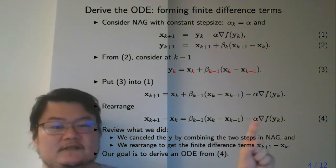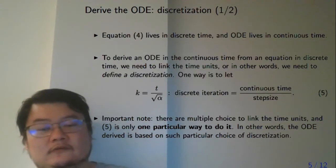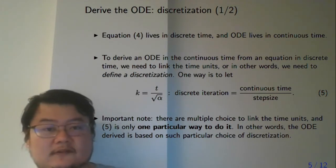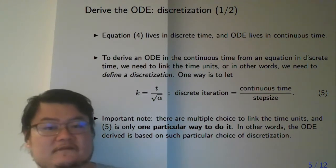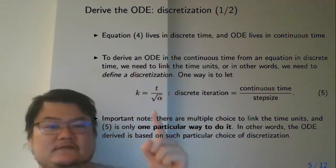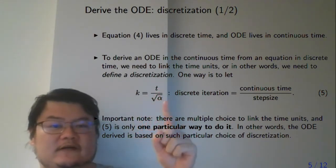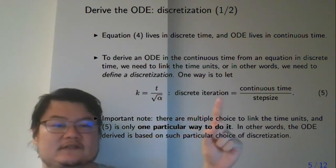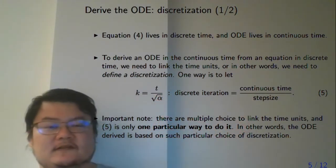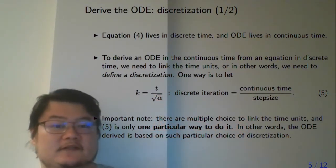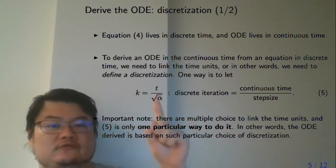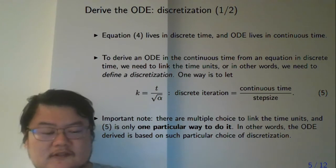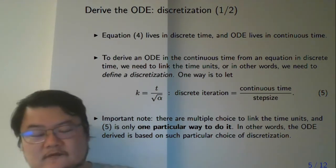Because the finite difference equation is in discrete time and ODE is in continuous time, to link them you need discretization. Here the discretization is k equal to t divided by square root alpha, which means the discrete iteration is time divided by step size. Note that alpha is the gradient step size, but here we take square root alpha as the discretization step size. This is just one particular way to do the discretization — you can do it another way and still get an ODE, but it will look a little different.